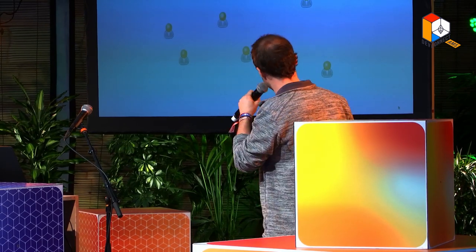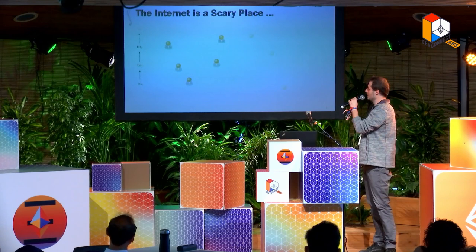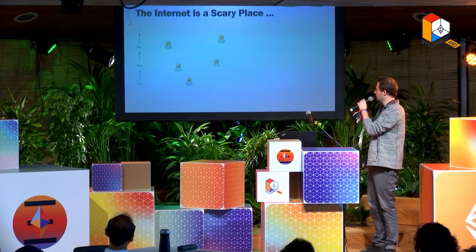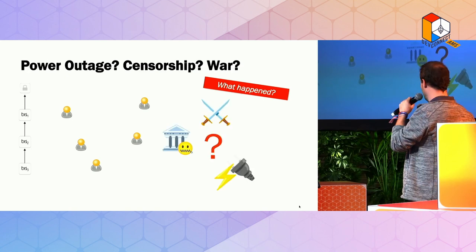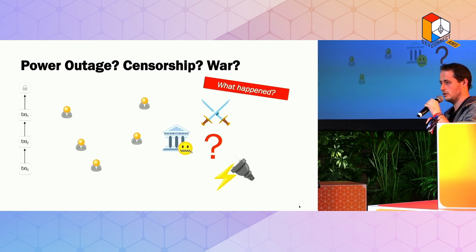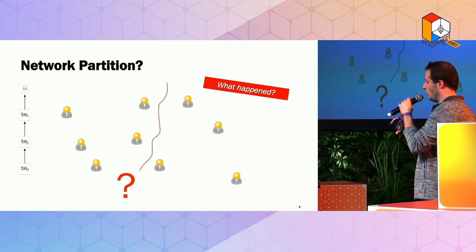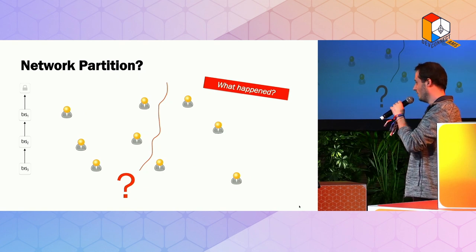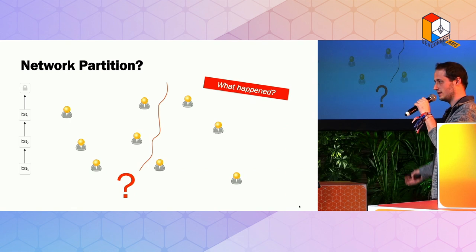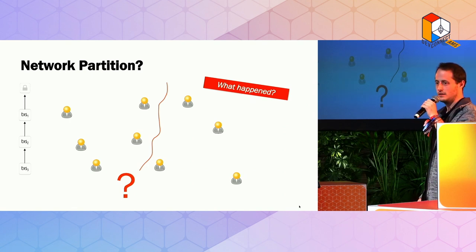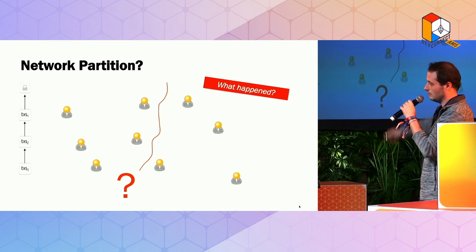We all know the internet is a scary place, so here's our consensus protocol. Unfortunately we can't see the world map, but it's happily producing blocks here. Everything's going well in our blockchain, except suddenly half of the network disappears. And we're asking ourselves, what happened? Is there something going on in one part of the world that we're not aware of? Is there war? Is there censorship? Is there a large-scale power outage? Or did one of these big ships damage one of our ocean cables and the network is partitioned? Maybe there was some misconfiguration of the routing and the network is split — a network partition.